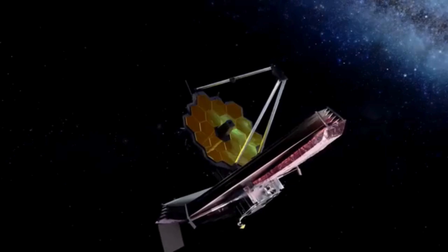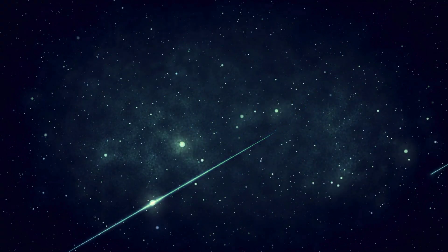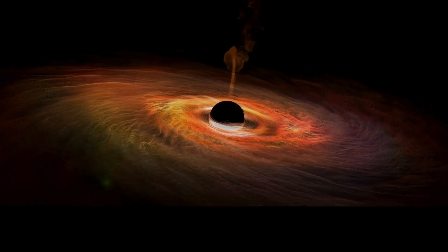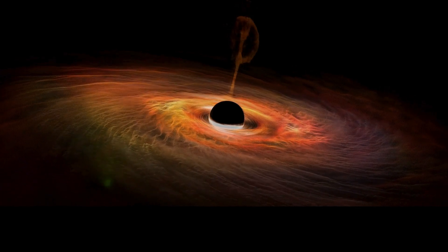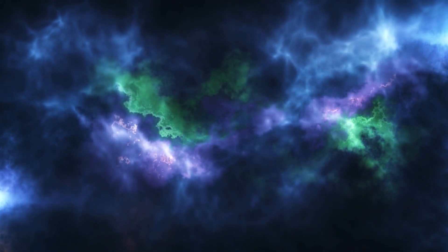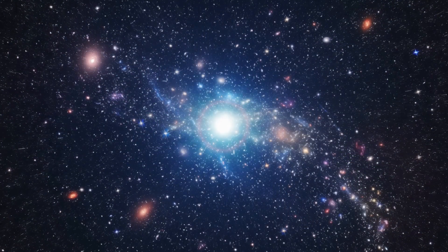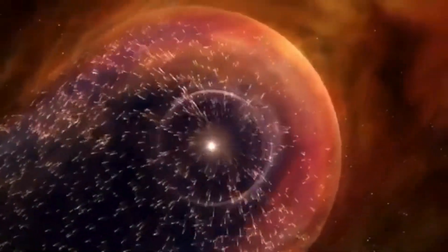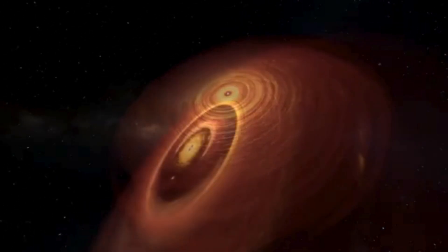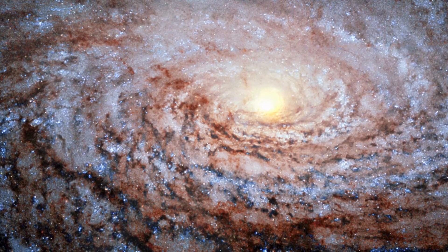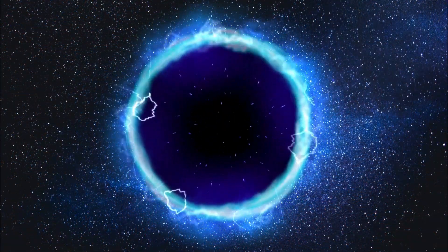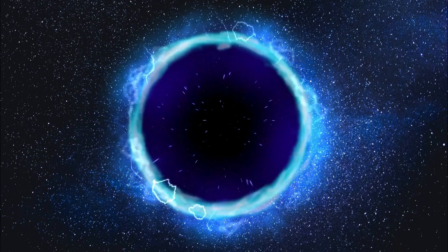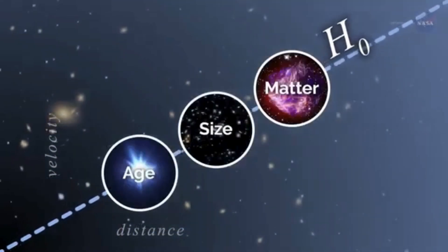The quantum AI has given us coordinates — a precise location where this object should be. Telescopes are now being pointed in that direction, and if they find what the AI predicts, it will be one of the biggest astronomical discoveries of the century. Because this isn't just about adding another planet to the list. It's about rewriting the history of our solar system. If confirmed, we're talking about a paradigm shift in our understanding of how planetary systems form, how objects migrate over billions of years, and how our cosmic neighborhood came to be.